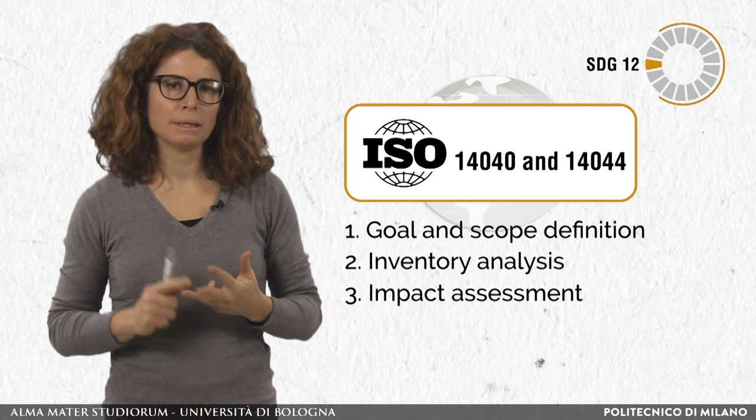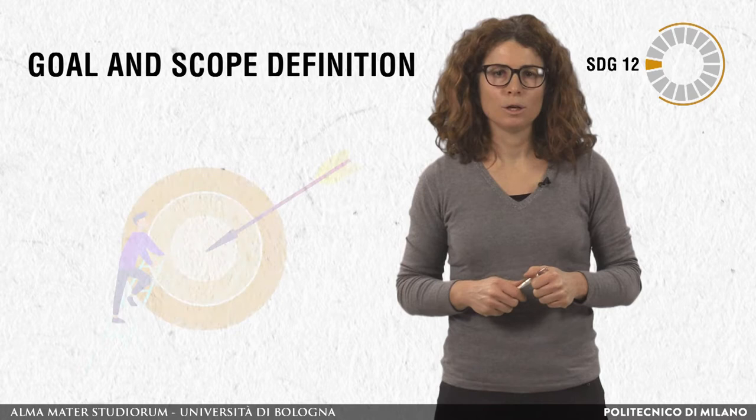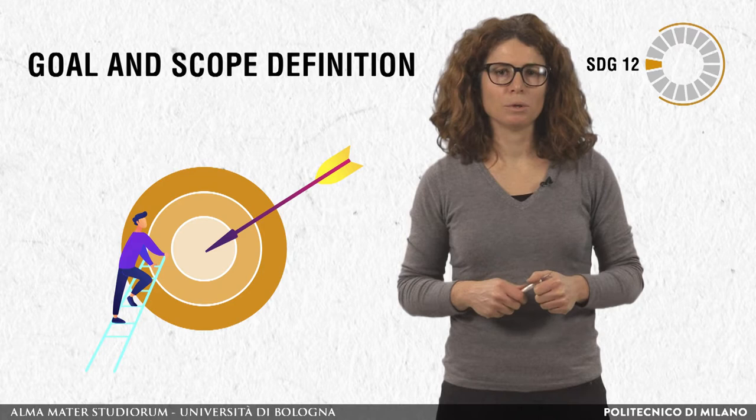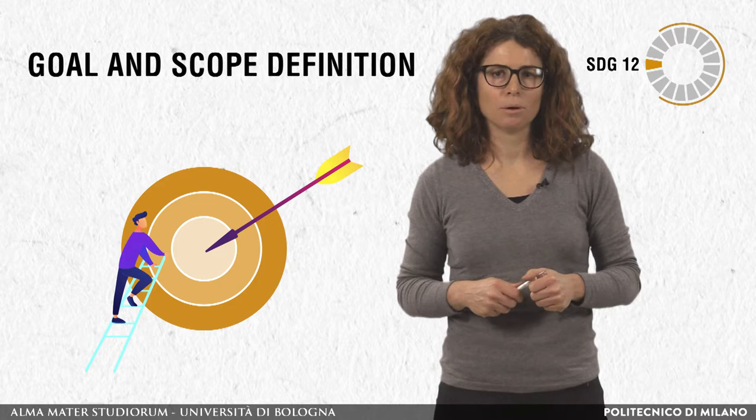In the first step, goal and scope definition, the intended application and the reasons for carrying out the study are stated. Moreover, a precise description of the object of the study is given, together with the system boundaries and the functional unit. The functional unit quantifies the function of the system under study. Comparison between systems is possible only when they have the same function, quantified by the same functional unit.